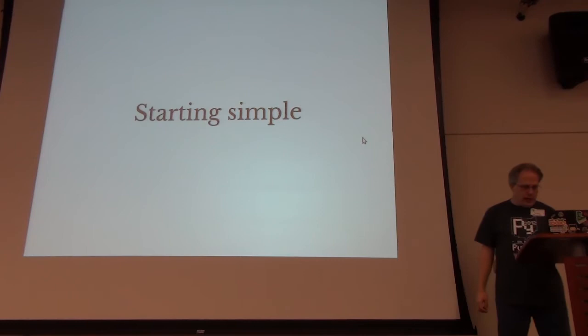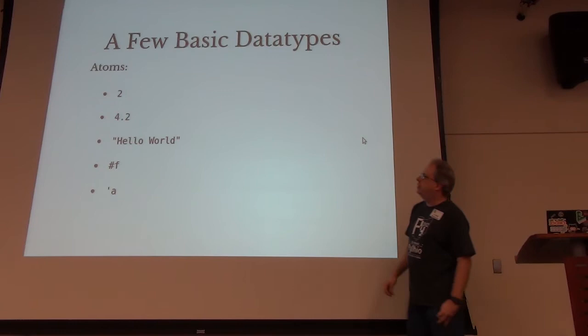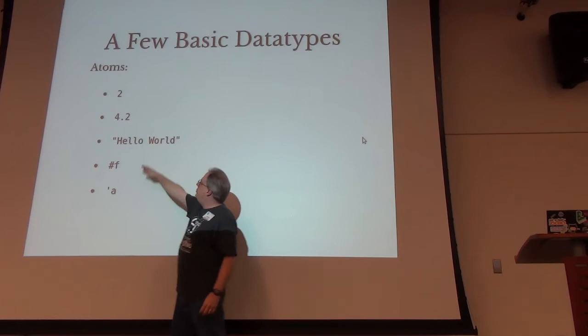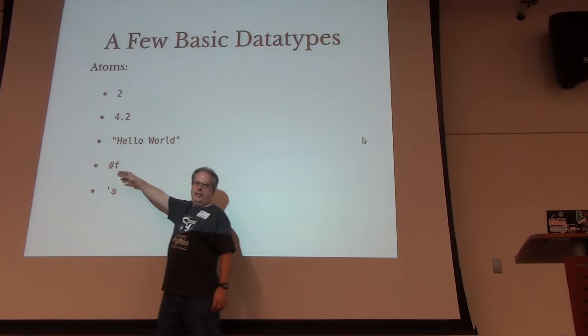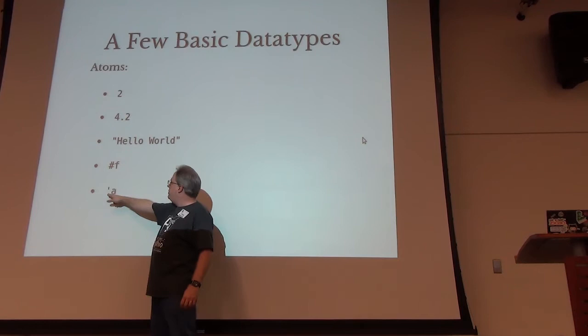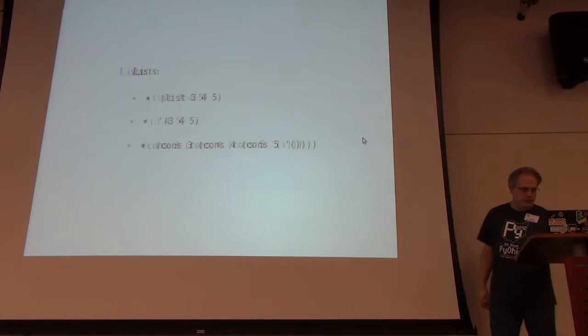Let's start simply. There are different data types in a Lisp-type language and in Scheme in particular. You have integers, floats, strings with double quotes, and booleans — false and true are preceded by a pound sign with an F or T. And then there's a symbol, which I'll get into in just a second.